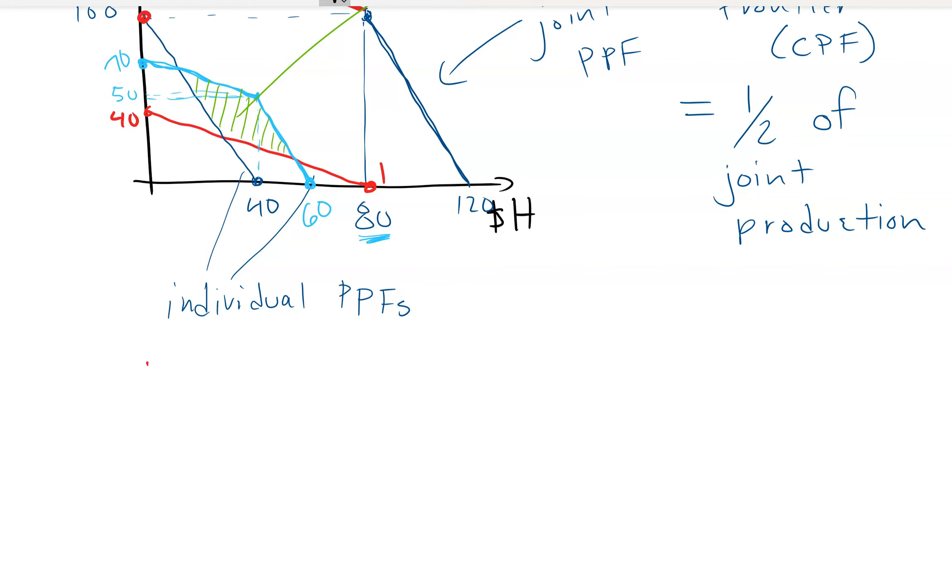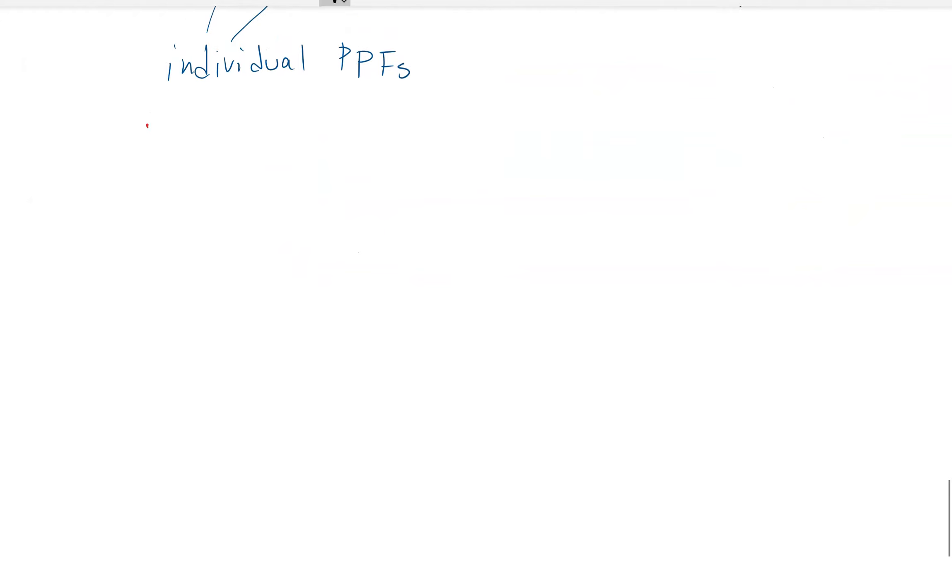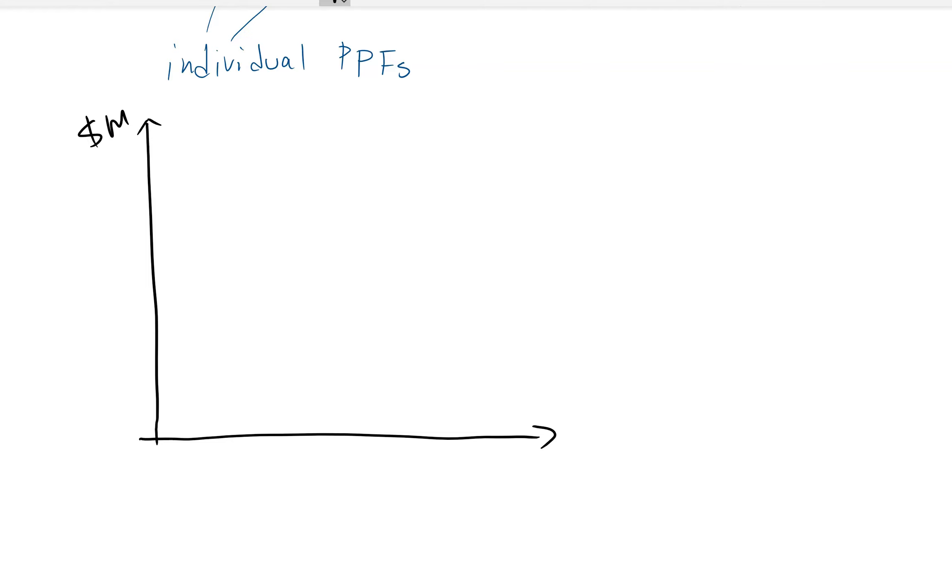And they get further out and closer together, and this potential gain gets smaller. And the most extreme case would be this last one. And this will be the last thing that I draw. So the last extreme case is, here's the PPF. It doesn't matter the slope.